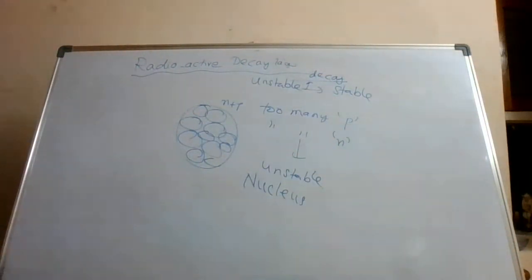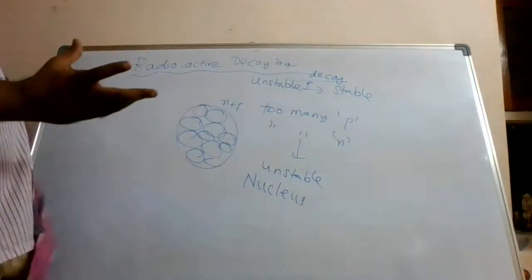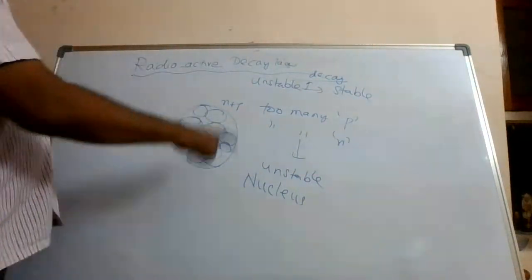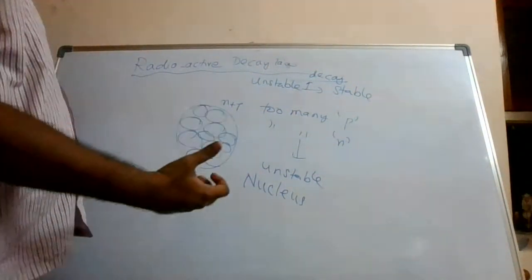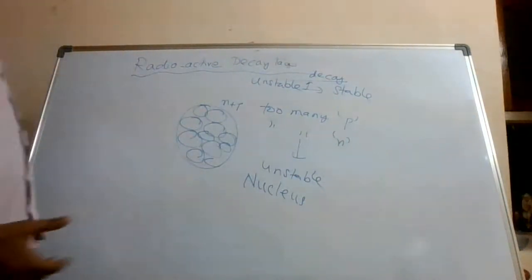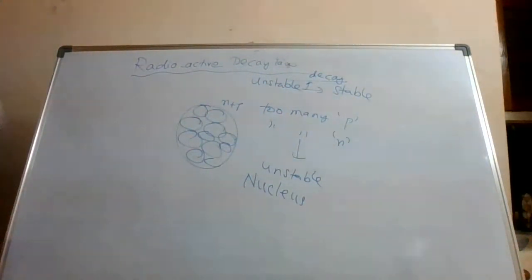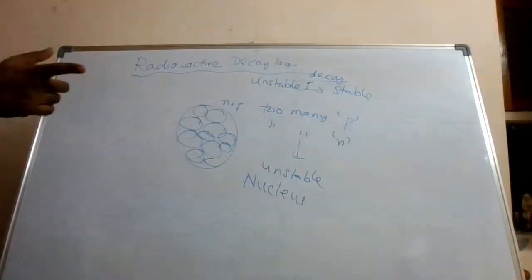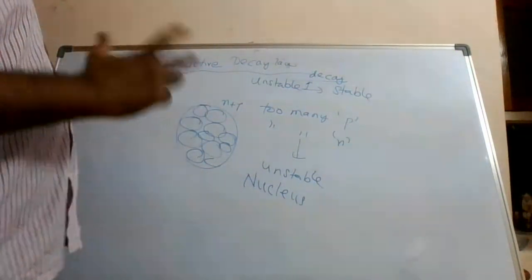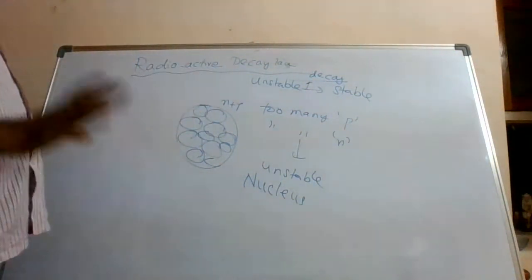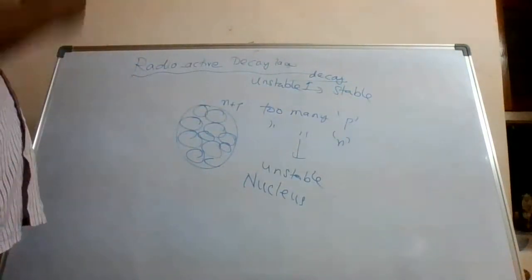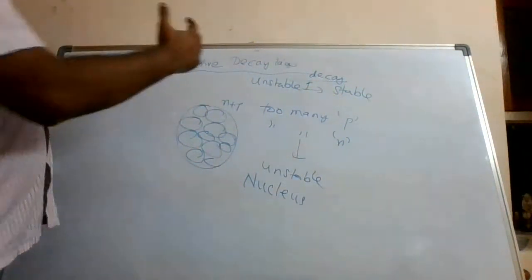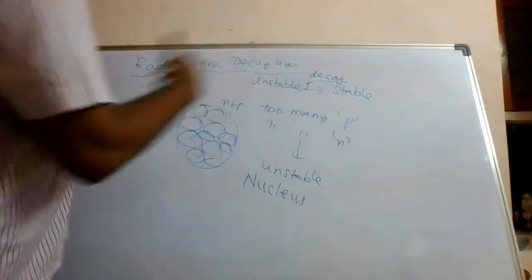A large nucleus is unstable, so some will be decaying — it is a natural process. We have seen that alpha decay, beta decay, and gamma decay are three cases wherein an unstable nucleus tries to decay and tries to become a stabler version.